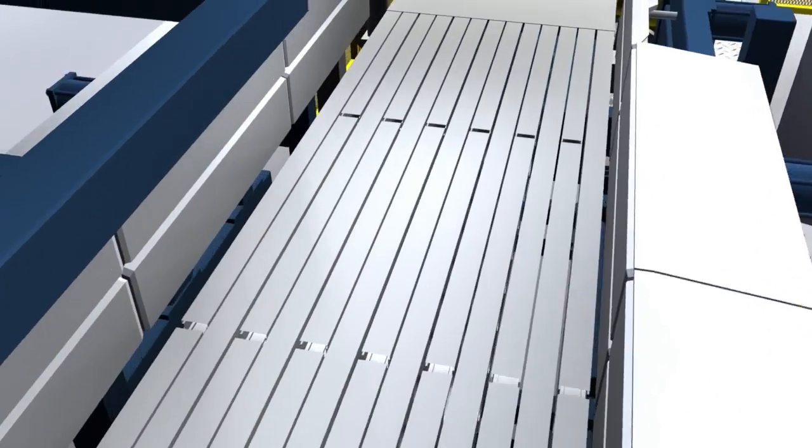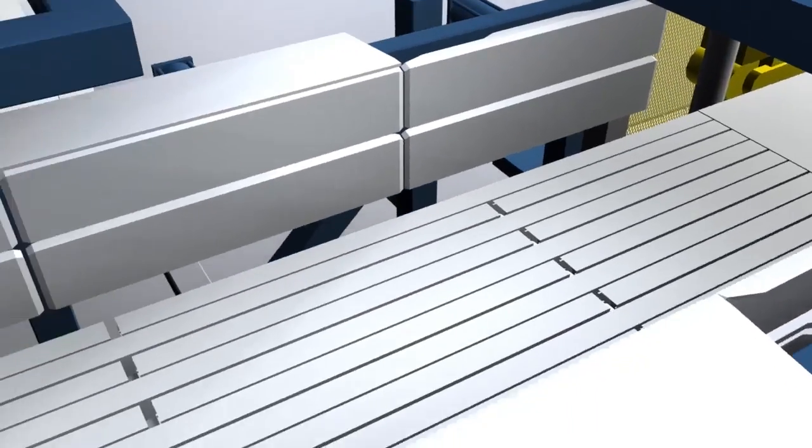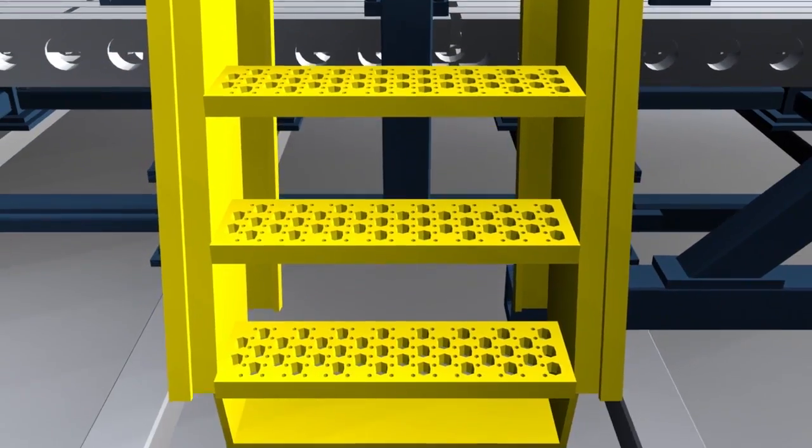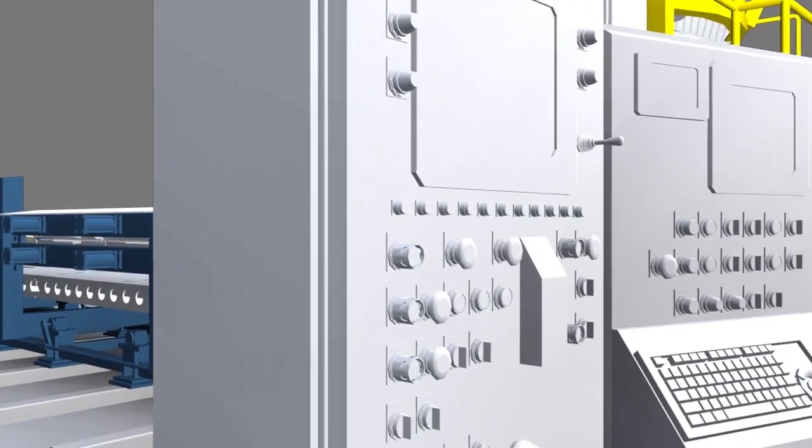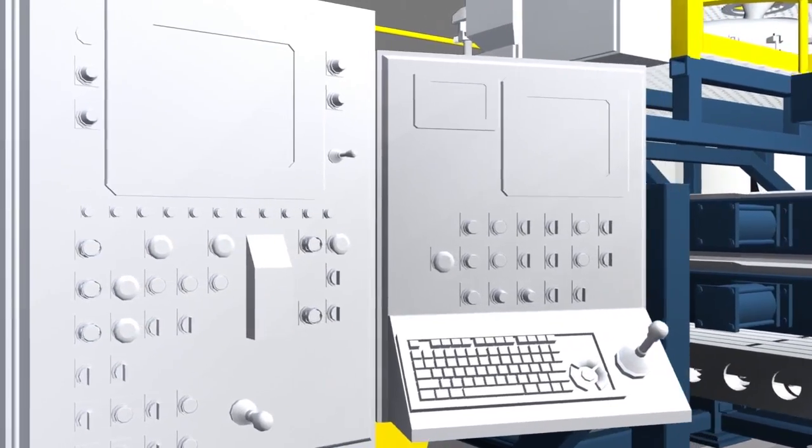The conveyor transports the molds to shakeout for sand removal and cooling. With precisely controlled movement, molds don't break and slack between the molds is non-existent in Waupaca foundry castings.